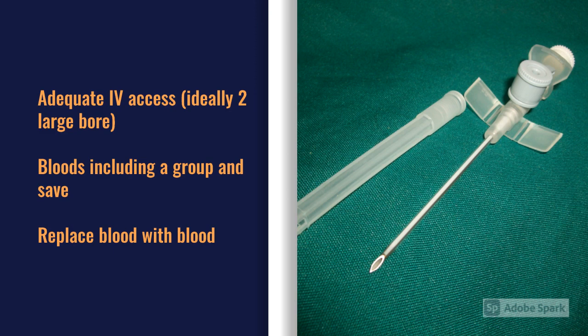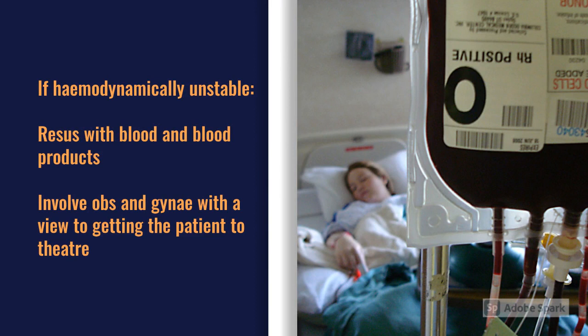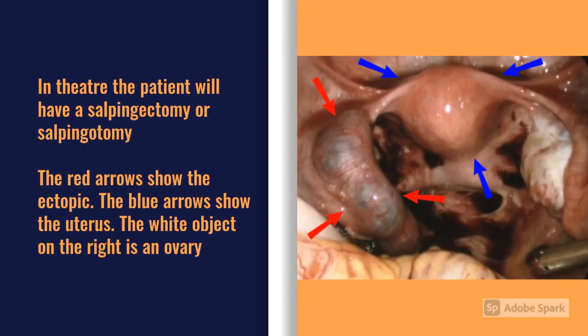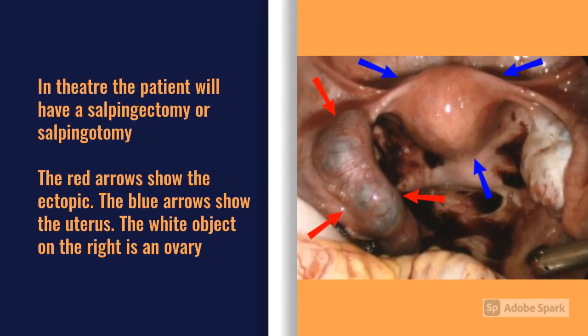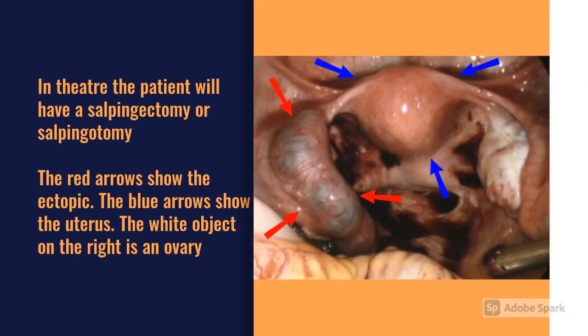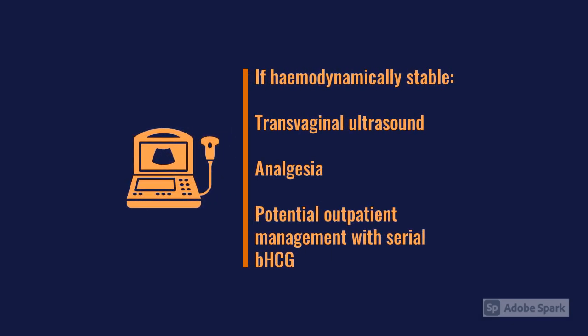The key to management is cardiovascular stability. If they're unstable, the management is relatively straightforward in theory, though technically difficult to achieve. These patients need to be resuscitated with blood products, you need to speak to your obs and gynae team, and they need to get to theatre relatively quickly to remove the ectopic pregnancy and repair whatever damage has been done — they may need a salpingectomy or salpingotomy, and sometimes part of the uterus itself.